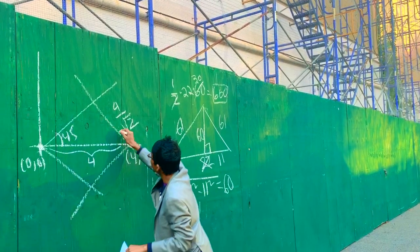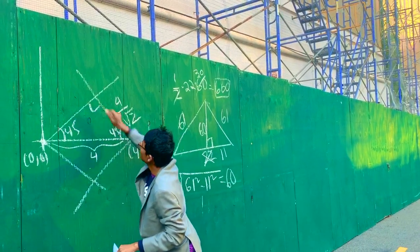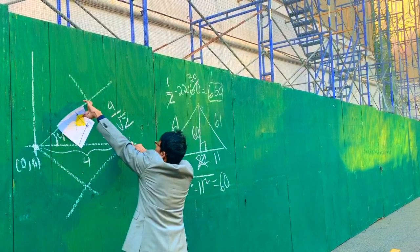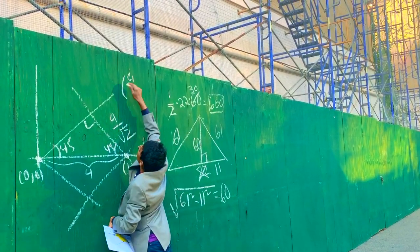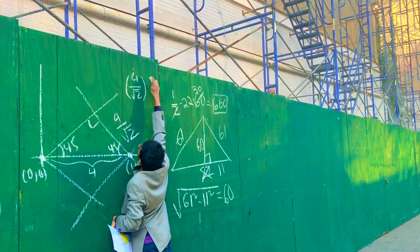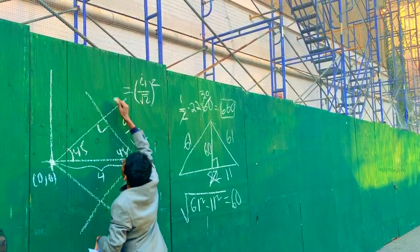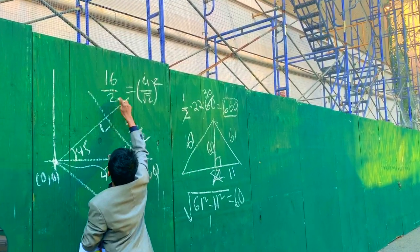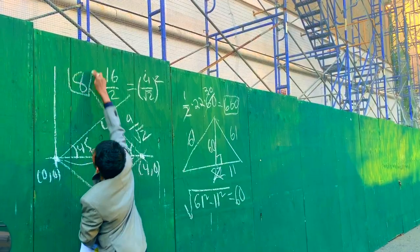The reason I have that is the 45-45-90 triangle. So that means the area of the square is going to be (4 over square root of 2) squared, which is going to be 16 over 2. And what's 16 over 2? 8.